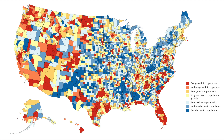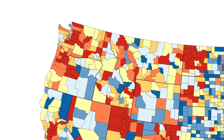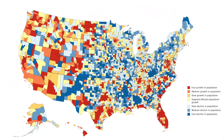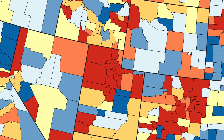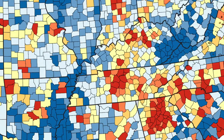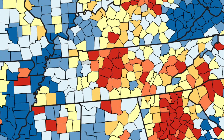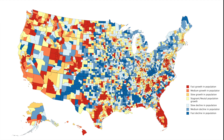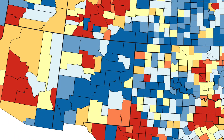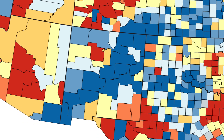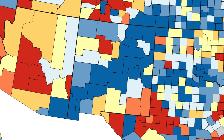This map shows us the population growth by county in the United States. The areas with the most growth are the Pacific Northwest, some key cities in Texas, Florida, and much of the west. I can see Salt Lake City metro in there, as well as western North Dakota — and that is due to the energy sector. You can also see the counties around Atlanta and Nashville growing, as well as Charlotte, North Carolina.